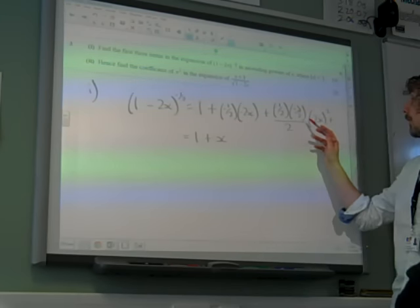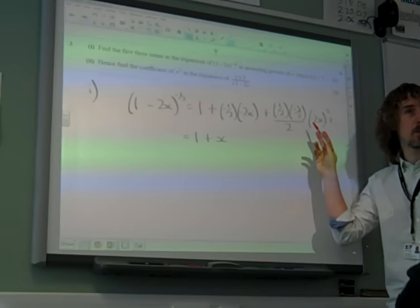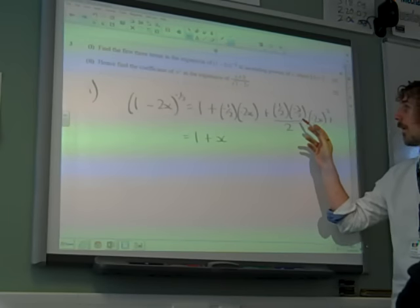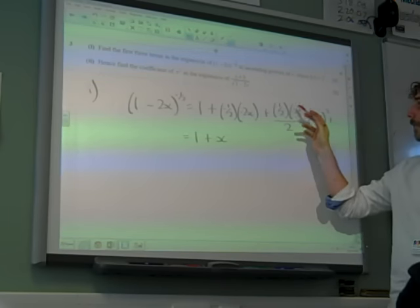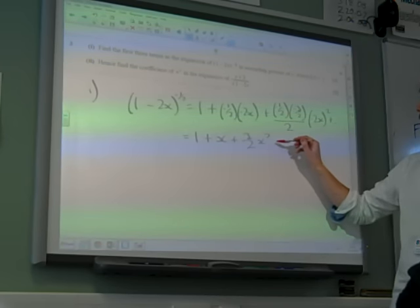And then we've got - what have we got here? This would be a 4, and the half and the half there would be a quarter. So we can cancel those out. We're left with -1 times -3, which is +3/2, times x².